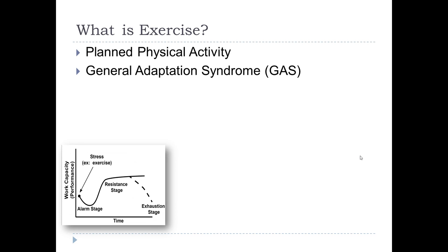The general adaptation syndrome states that if you put a stress — any kind of stress — to a system that it's not used to, it's going to go into what we call the alarm stage. It's not going to know what to do. For the first few days, you may have a really big decrease in performance. For example, when a virus enters the body, your body starts trying to adjust and you feel bad for a few days, you get a temperature or runny nose. But after a few days your body adapts to that stress and starts to fight back.